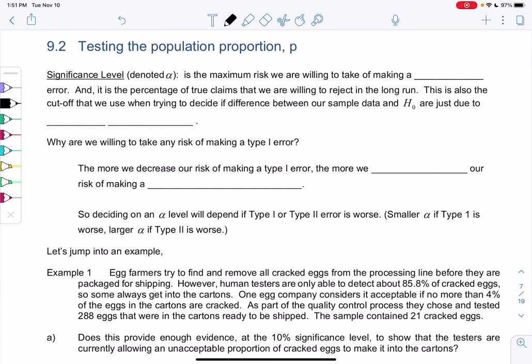Section 9.2, testing the population proportion p. We're going to finally do hypothesis tests in this section. We need a few definitions and then we'll jump into an example.